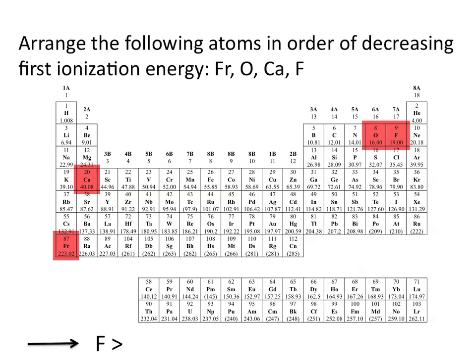That means that fluorine would have the highest ionization energy, followed by oxygen, followed by calcium, and francium would be the atom where an electron could be most easily removed.